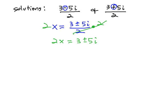Again, we want to get the i part alone with the plus or minus, so we have to subtract 3 from both sides. 2x minus 3 equals plus or minus 5i.